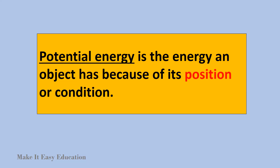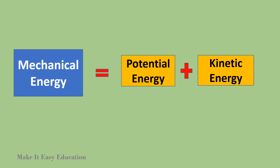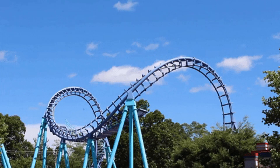Potential energy is the energy an object has because of its position or condition. Kinetic energy is the energy an object has because of its motion. Mechanical energy is the total potential energy and kinetic energy of an object.